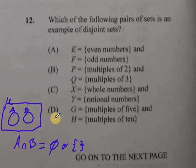So, when we look at these options, which one of them is an example of disjoint sets? Well, the answer will be A. Because even numbers are never odd numbers, or odd numbers are never even numbers.